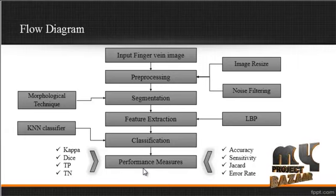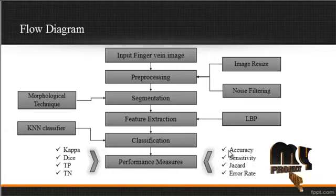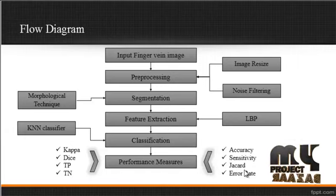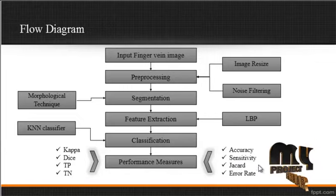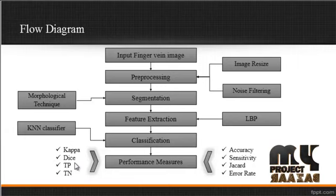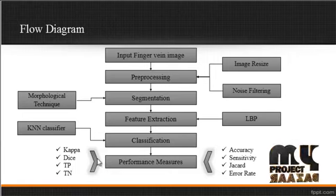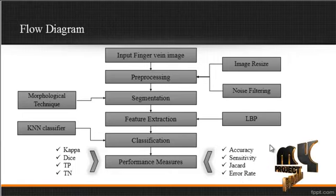After the classification process, performance measurement is carried out. The performance metrics include accuracy, sensitivity, Jaccard coefficient, error rate, kappa coefficient, dice coefficient, true positive, and true negative values. These values are used to justify whether the process is efficient or not.